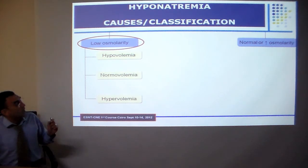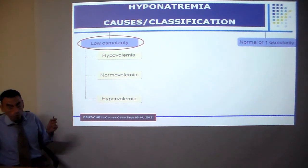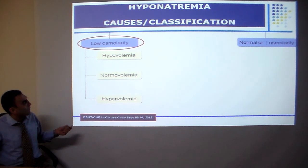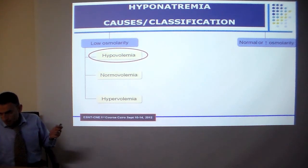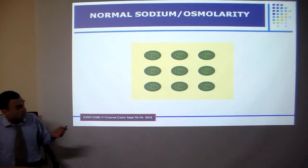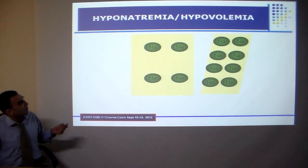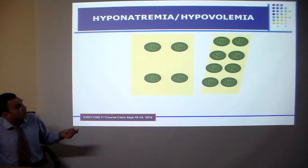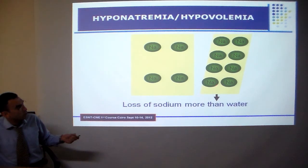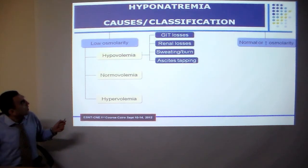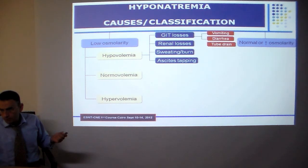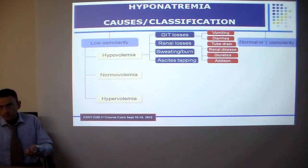Hypo-osmolar hyponatremia can be further classified according to the volume status of the patient. In hypovolemic hyponatremia, there is loss of both fluid and sodium, but the loss of sodium is greater than the loss of fluid. This occurs with GIT losses such as vomiting and diarrhea, and renal losses such as salt-losing nephropathy, tubular defects, and diuretic use.